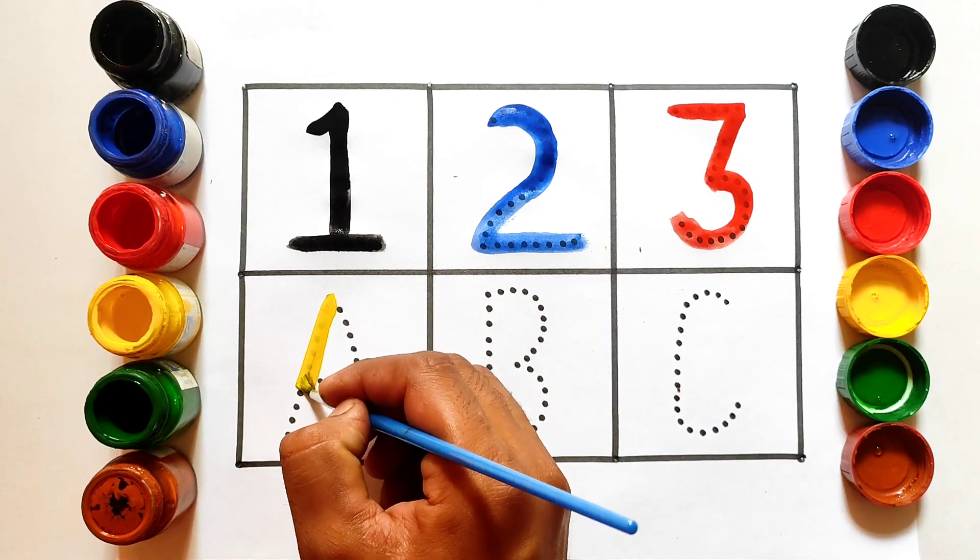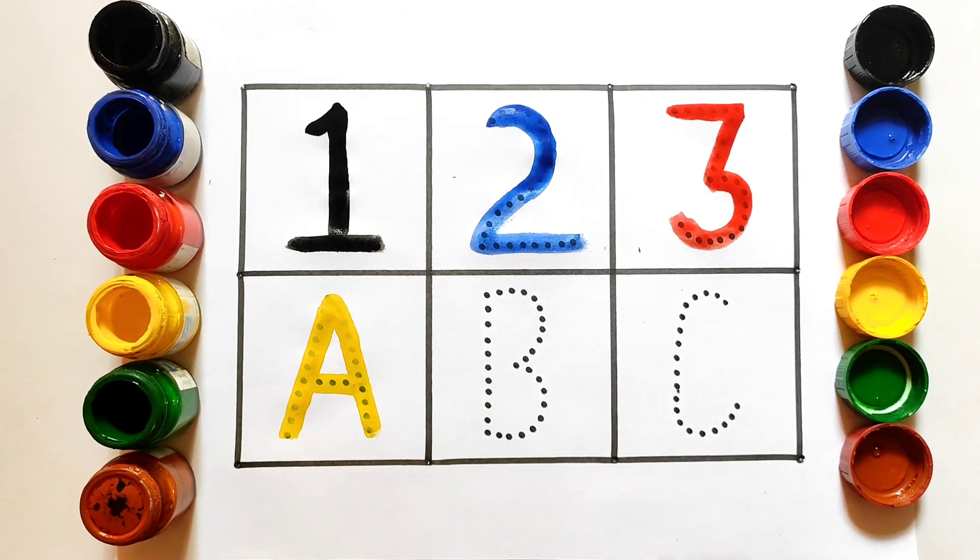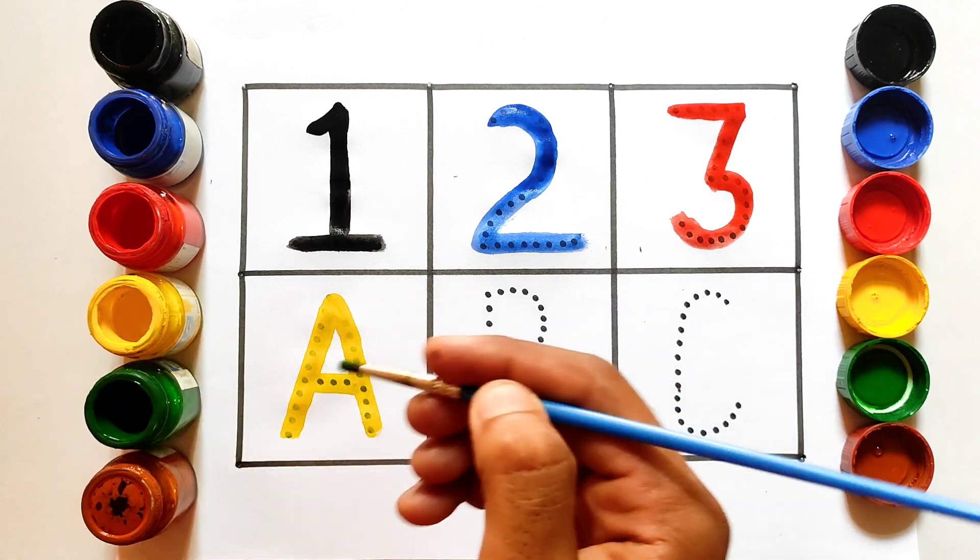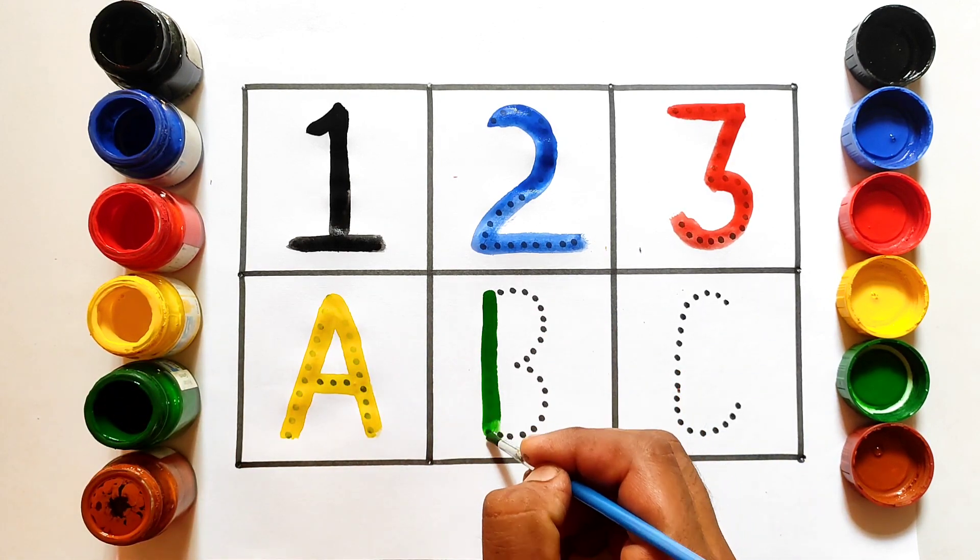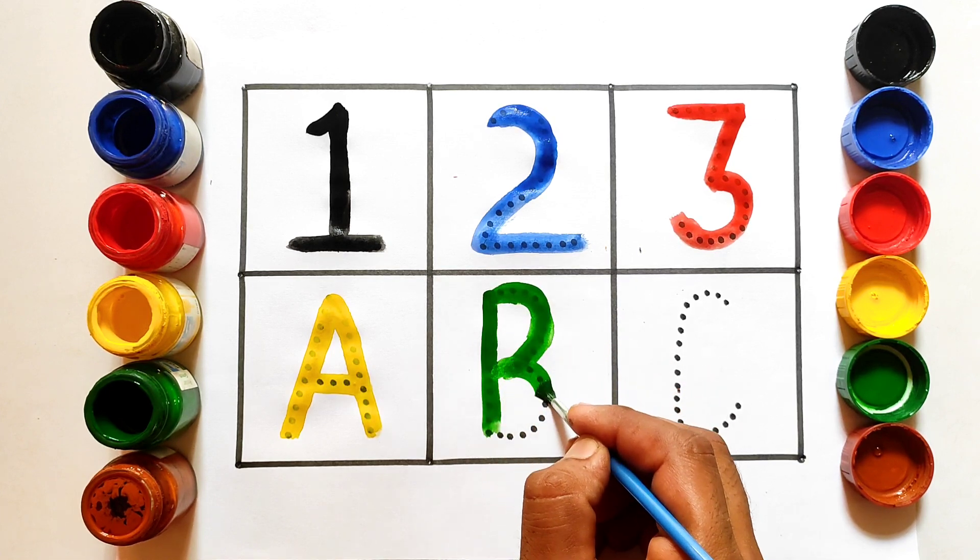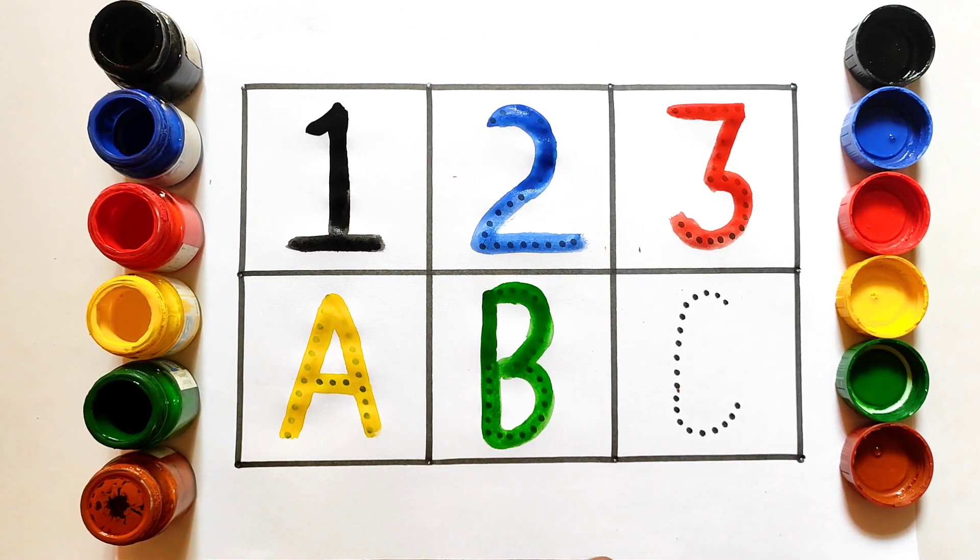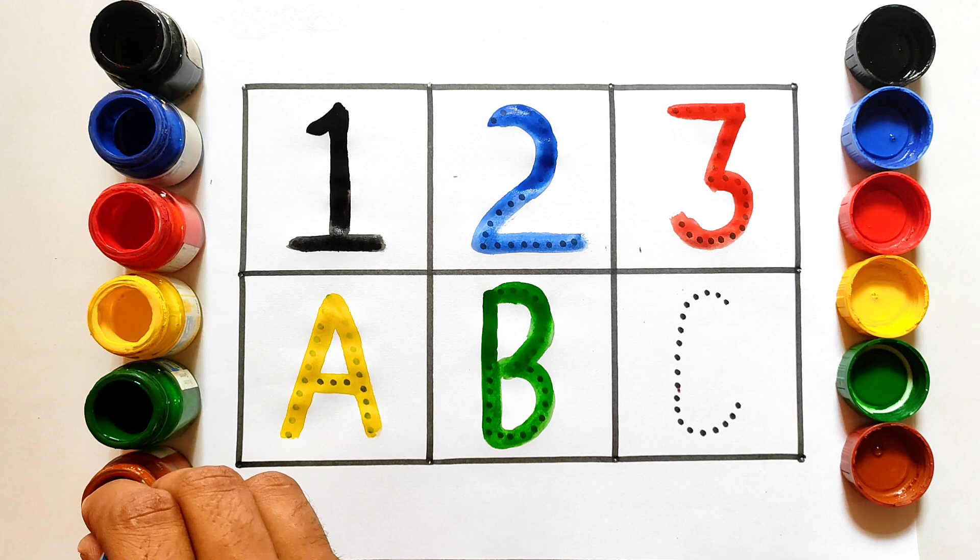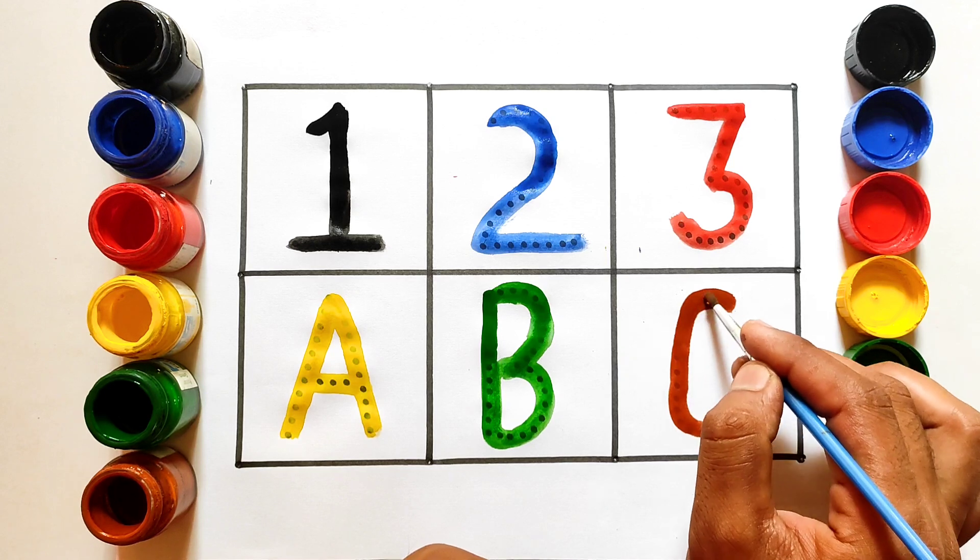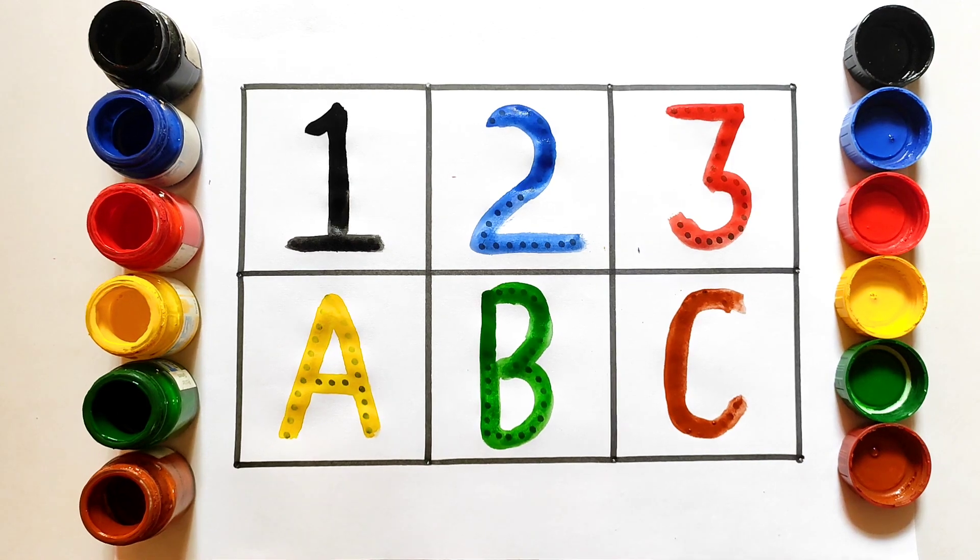A. A for apple. A, A. B, B, B for ball. B. C, C for cat. C, C.